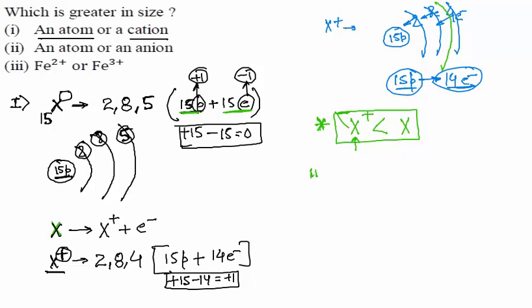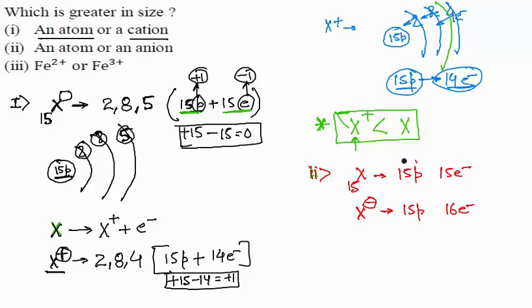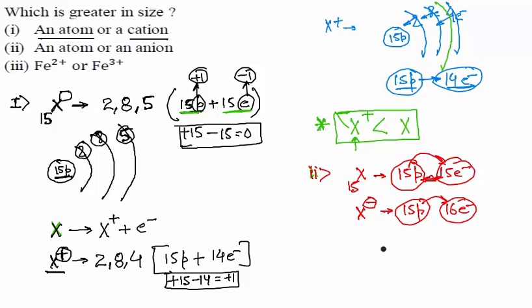Now for the second part — same logic. Take X with 15 protons and 15 electrons. If X gains one electron to form X⁻, it has 15 protons and 16 electrons. The hold of 15 protons on 16 electrons is weaker, so the size of X⁻ is greater than the size of X.